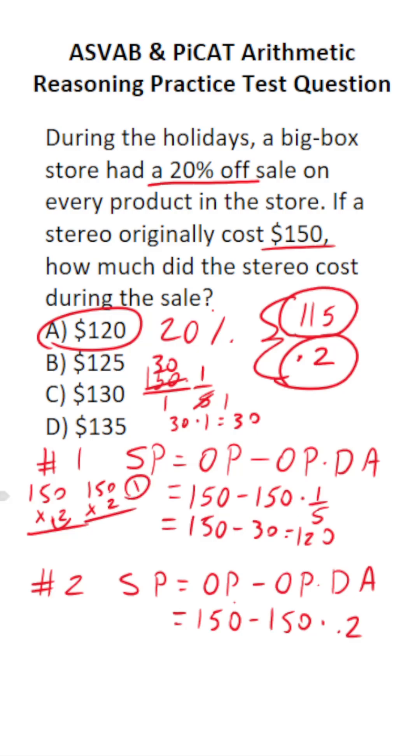2 times 0 is 0. 2 times 5 is 10, so bring down a 0, carry a 1. 2 times 1 is 2, plus 1 is 3. Bring our one decimal over. So this is 150 minus 30, which is 120.